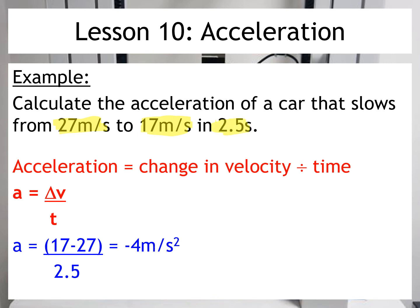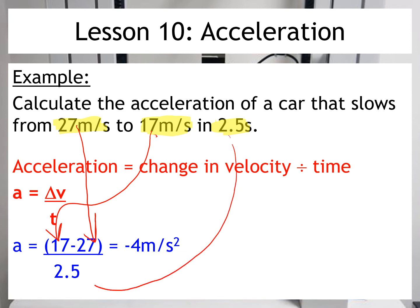So we've got our equation there: acceleration equals change in velocity divided by time. And this time, the starting velocity is 27, so that goes in here. And the final velocity is 17, which goes in here. And once again, we put time in the bottom here. So now when I complete the calculation, the answer I get is minus 4 metres per second squared.